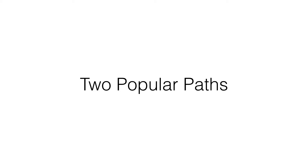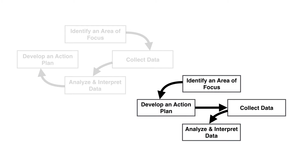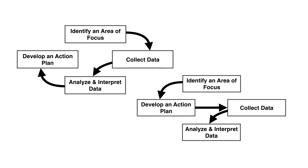In general, there are two popular paths for conducting action research. The first path begins with identifying an area of focus, then collecting data, analyzing and interpreting the data, and concluding with an action plan — notice that the action plan is the conclusion of this research project. Another popular path is to start with an area of focus, develop an action plan, often in conjunction with comparing two different types of methods, collect data to determine which method may be more beneficial to students, and then analyze and interpret the data. Both are very viable approaches; you'll always start with identifying the area of focus, but from that point it branches.